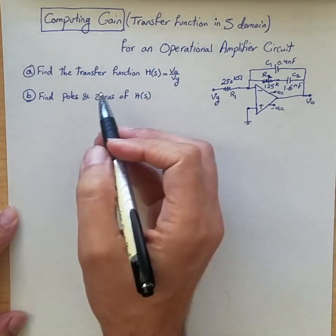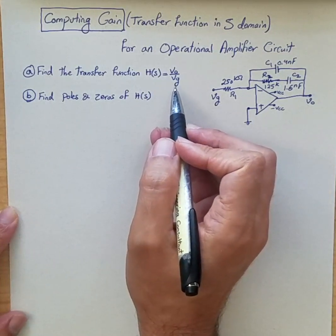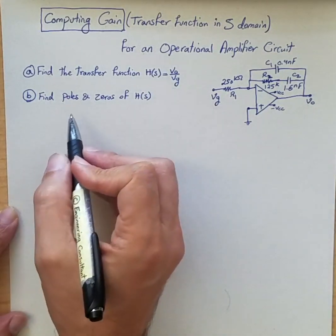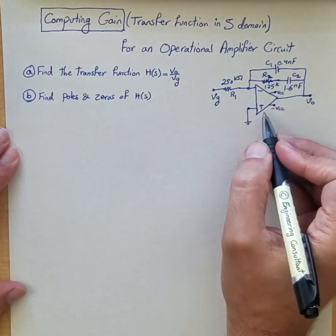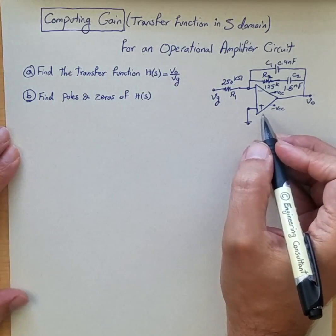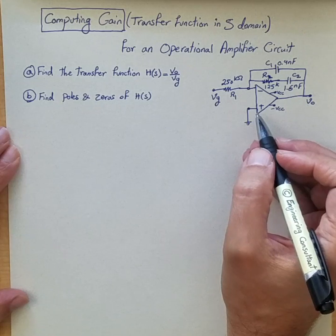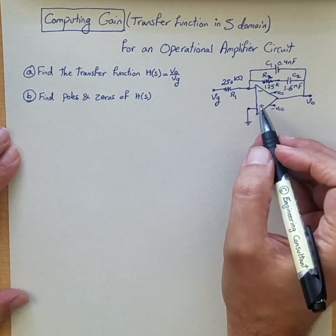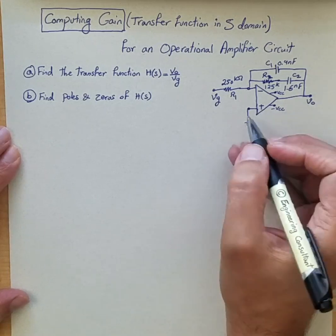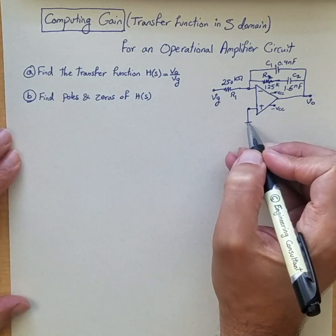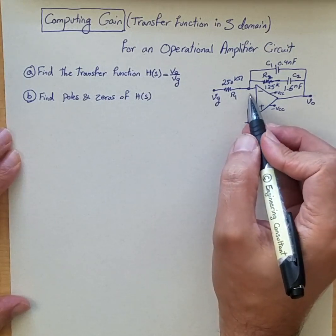So what we want to compute is the transfer function H of S, VO over VG or V source, and then after that find poles and zeros of H of S. So in this case since op-amp is an ideal op-amp and we are making the assumption that negative feedback is working within the acceptable boundary so the op-amp is not saturated, therefore virtual short is applicable. Since the positive terminal is connected to ground, therefore because of virtual short negative terminal also has to be at zero voltage.